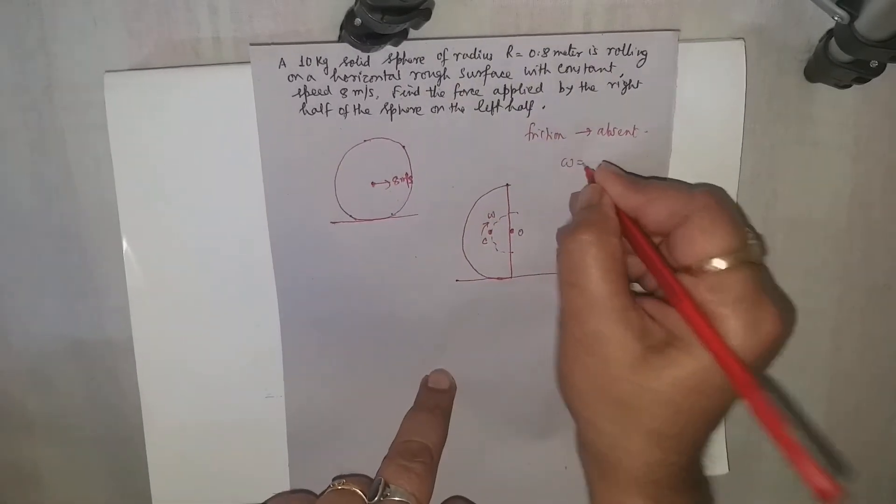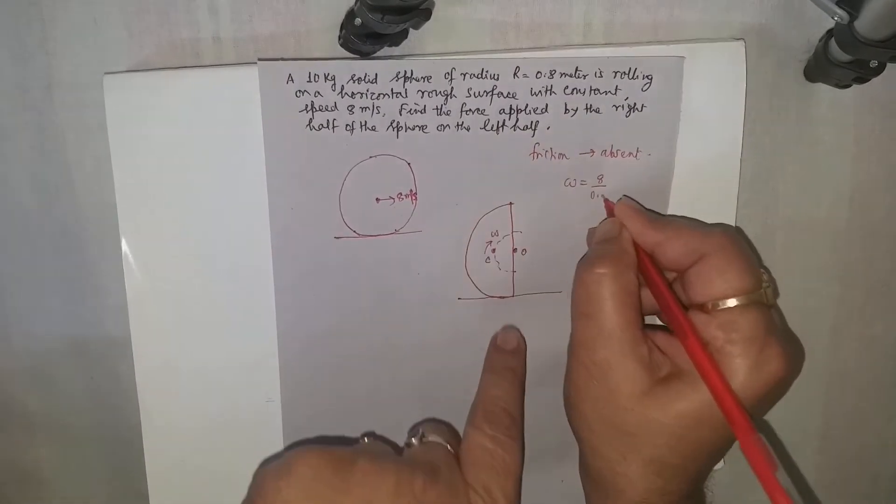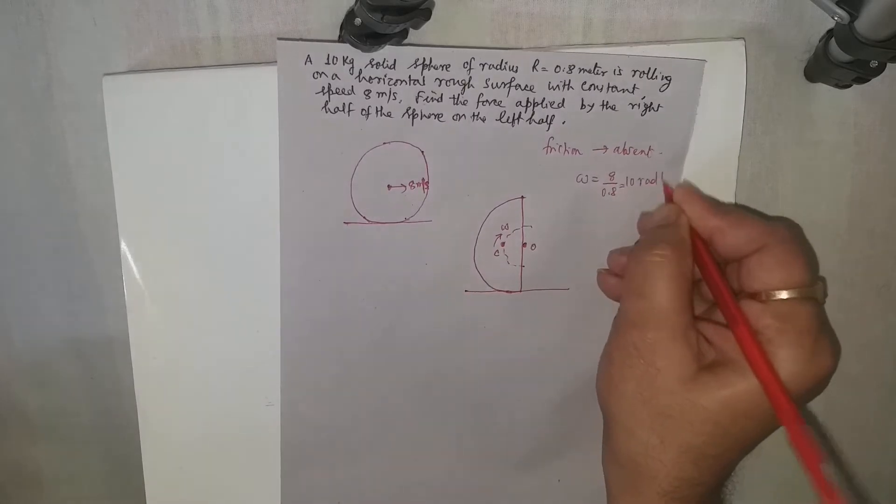solid sphere. So what will be the angular speed? Omega will be V by R. V is 8 and radius is 0.8, so omega is 10 radians per second.